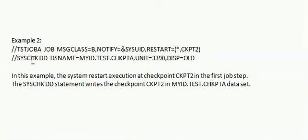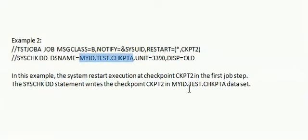You can also code RESTART equal to star — this indicates the job will begin from the first step. In example 2, RESTART equal to star comma CKPT2 is given. The system restarts execution at checkpoint CKPT2 in the first job step. The SYSCHKDD statement writes checkpoint CKPT2 to the dataset MYID.TEST.CHKPTA.